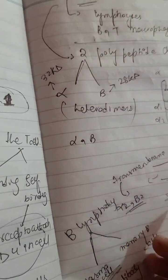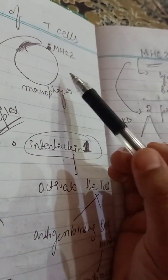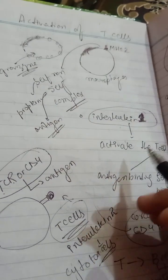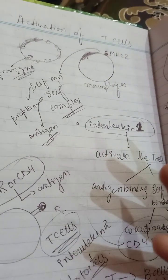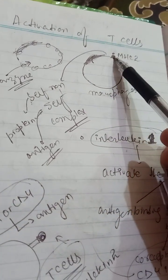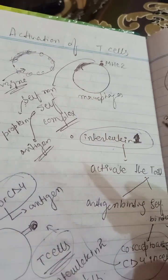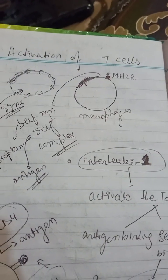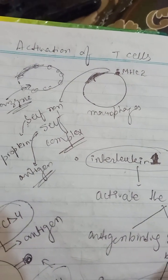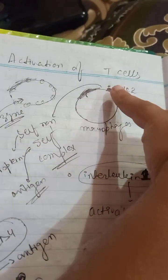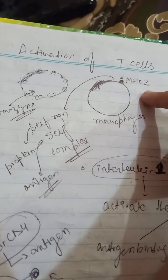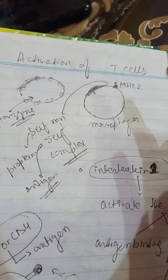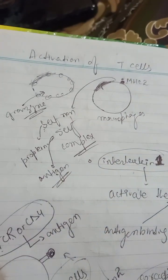The memory B cell takes the record of the MHC2 antigen. In MHC2, the antigen will get destroyed, not the cell. In MHC1, the cell itself gets destroyed because of the granzyme and the perforin. Here, MHC2 is used to make the antibody, to activate other cells, and then the antibody is produced. This is the activation of T cells.